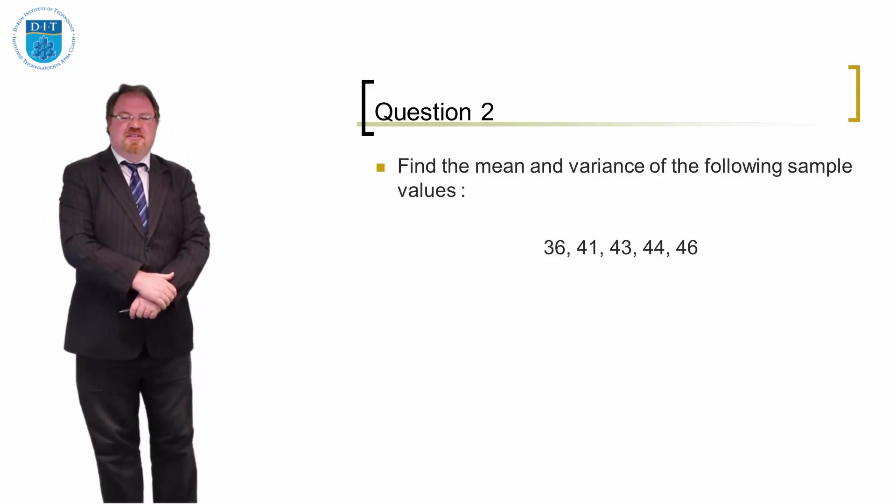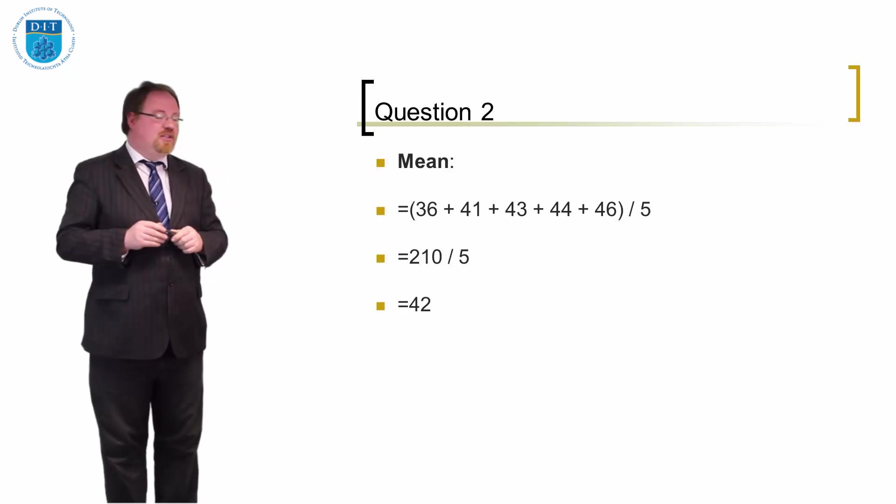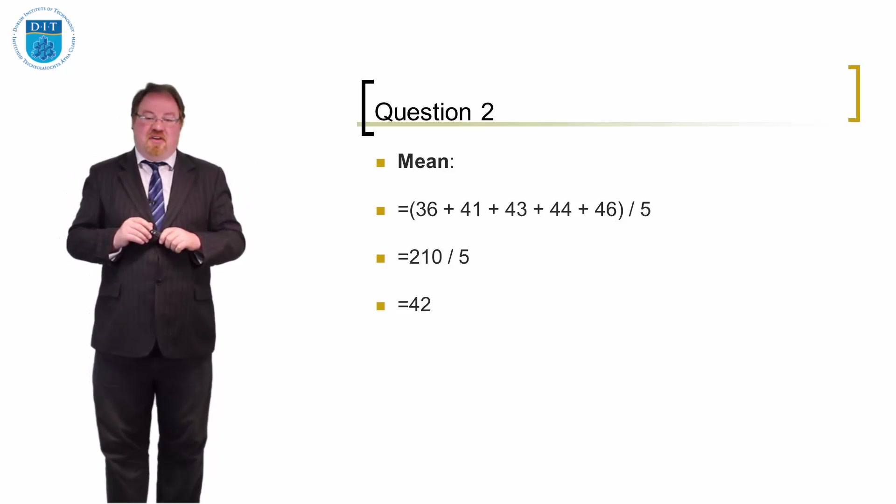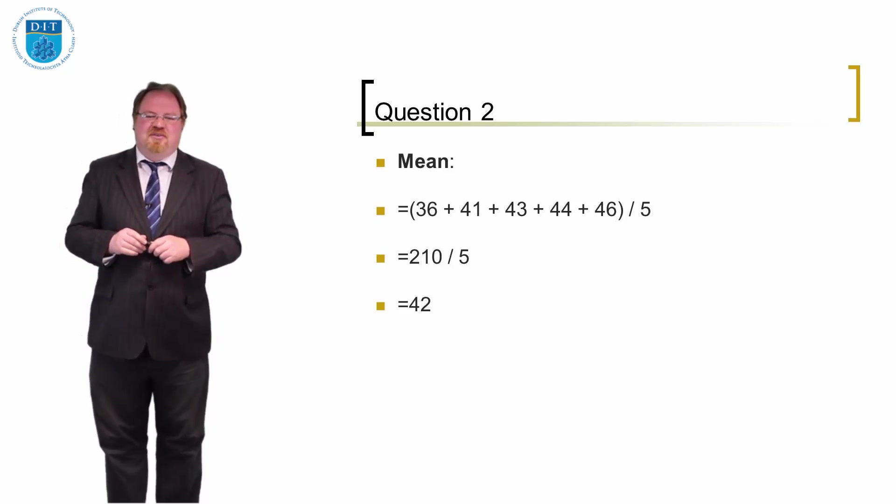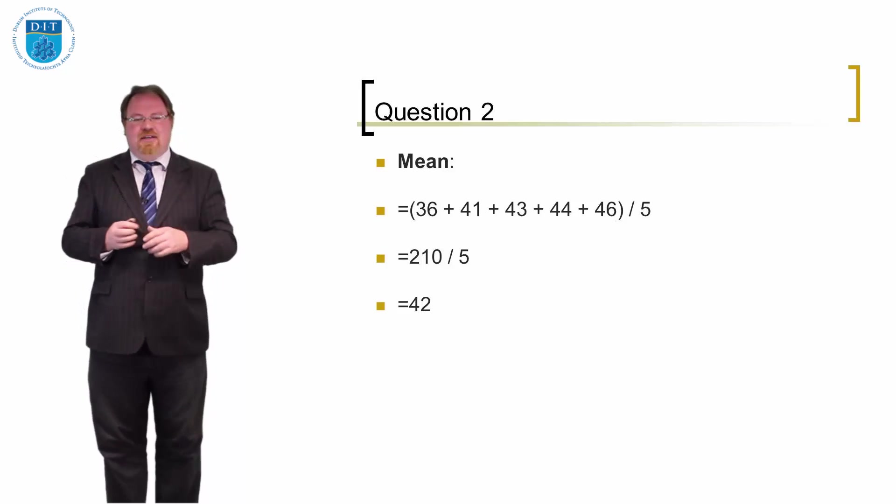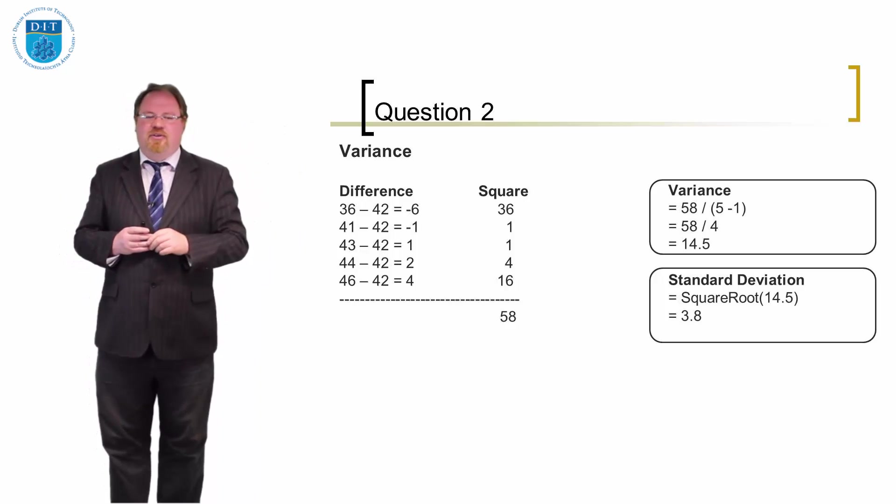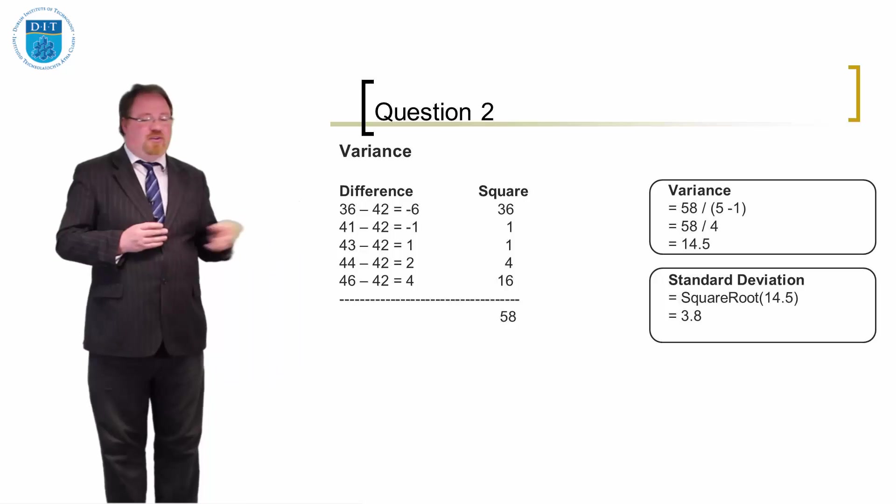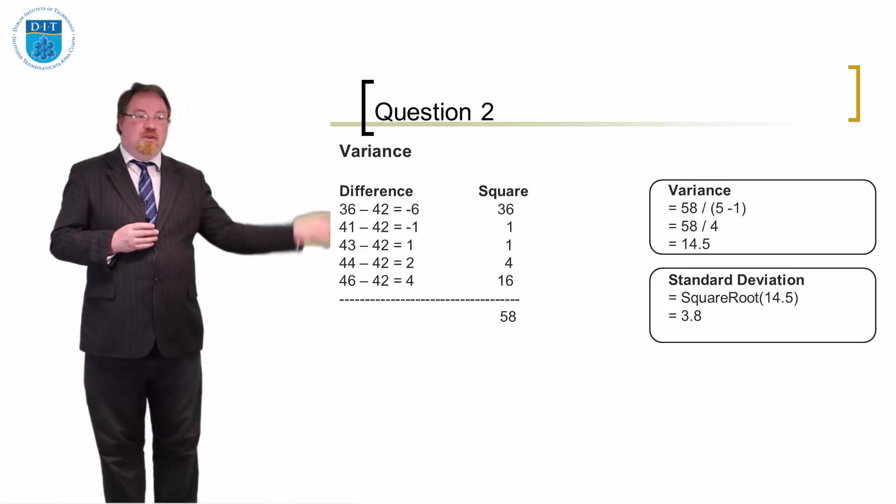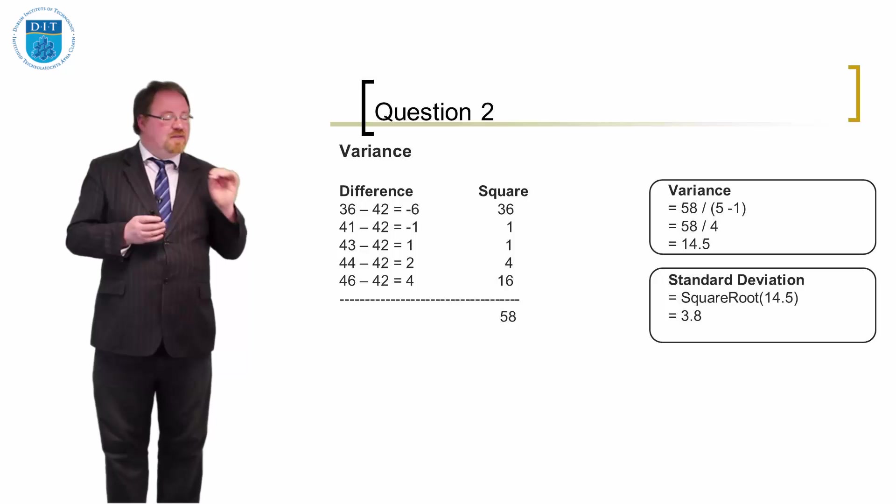Okay, I'm assuming you've paused this. So we calculate the mean quite simply. We add up all the numbers: 36 plus 41 plus 43 plus 44 plus 46. We get 210 and then we divide by 5, which is the number of numbers. So our answer to the mean is the answer to life, the universe and everything. It's 42 of course. The variance we calculate by taking that number 42 and subtracting each individual point from 42. So we subtract 36 from 42, we subtract 41 from 42, 43 from 42, 44 from 42 and 46 from 42. We get all those differences and then we square them. We multiply them by themselves: 36, 1, 1, 4 and 16, and then we add up and we get 58.